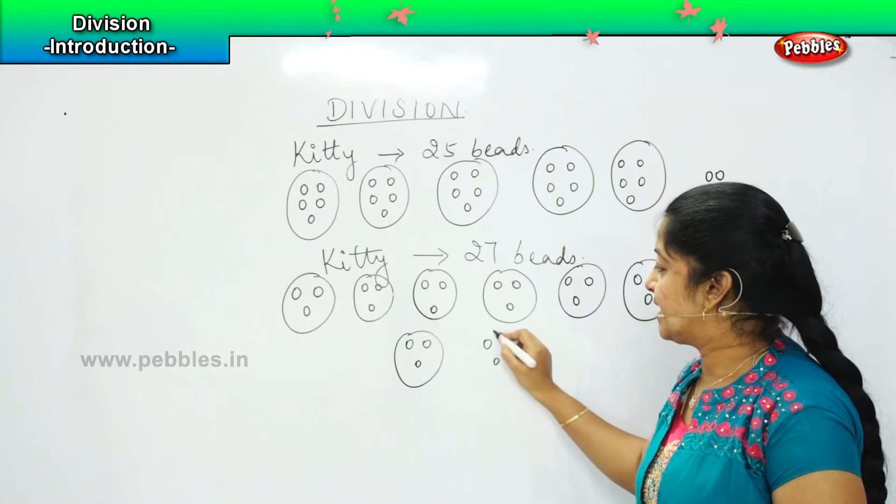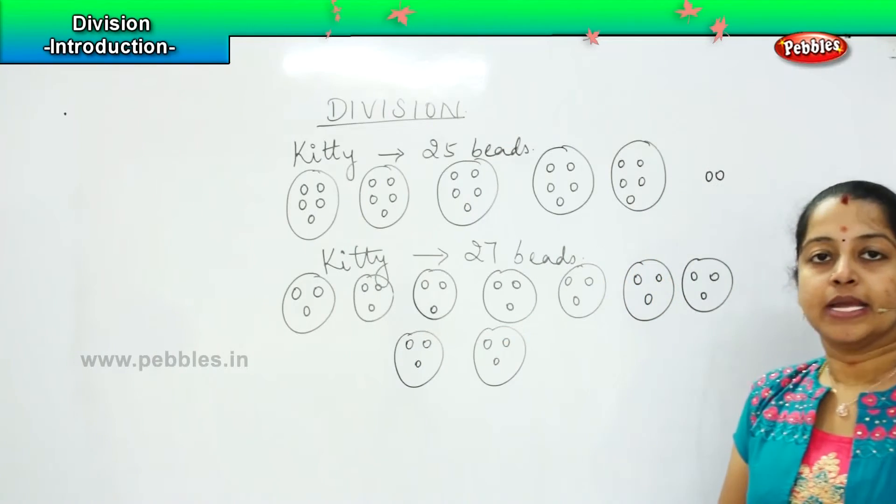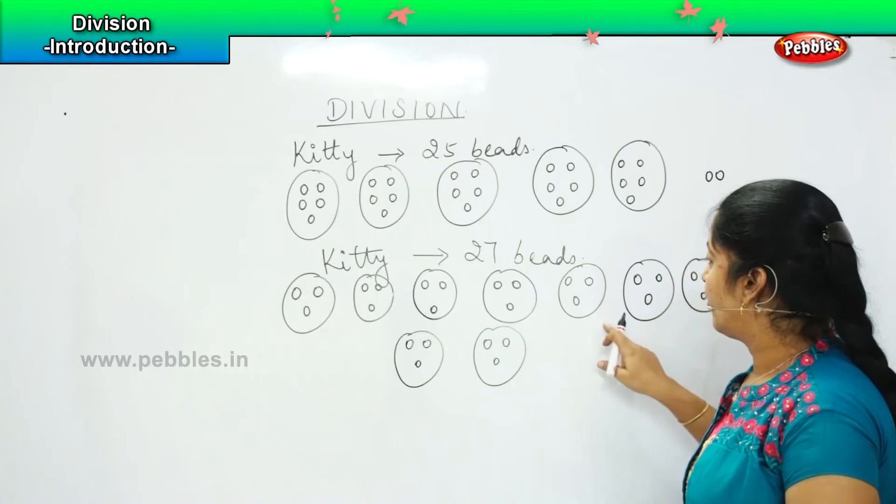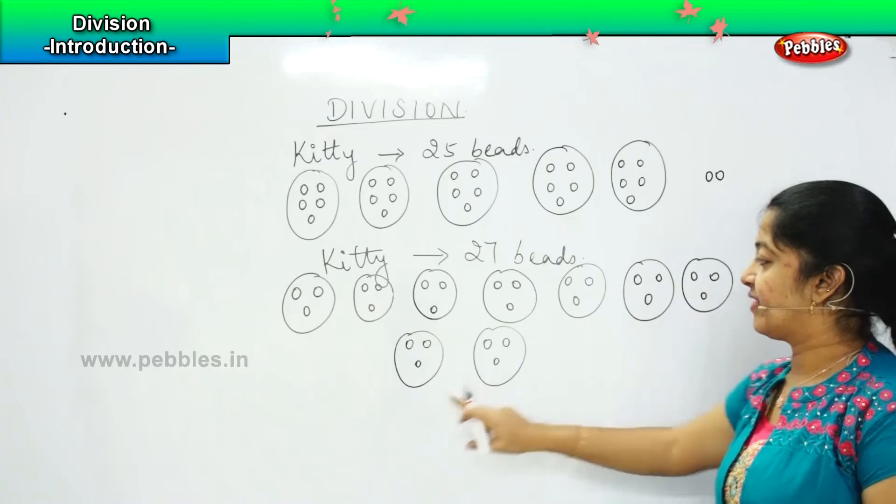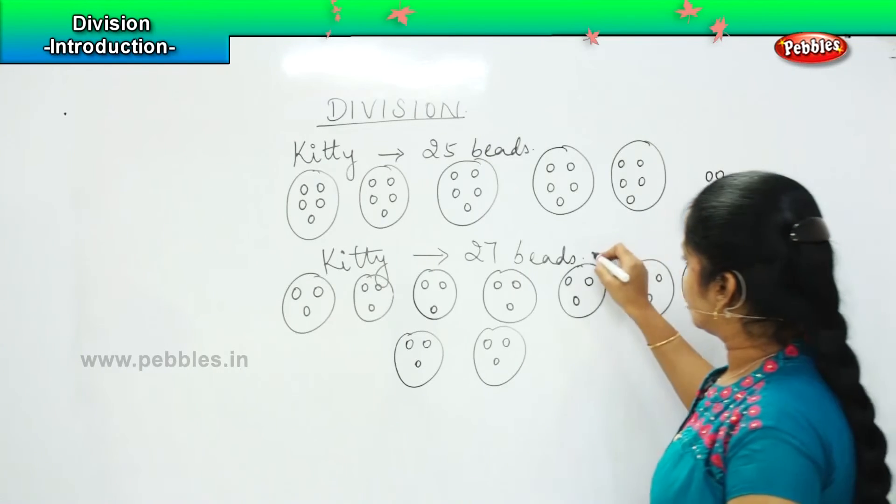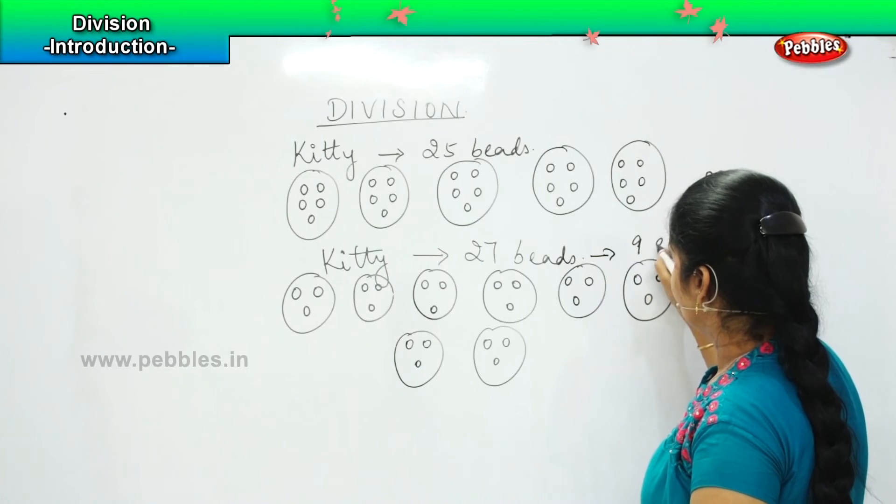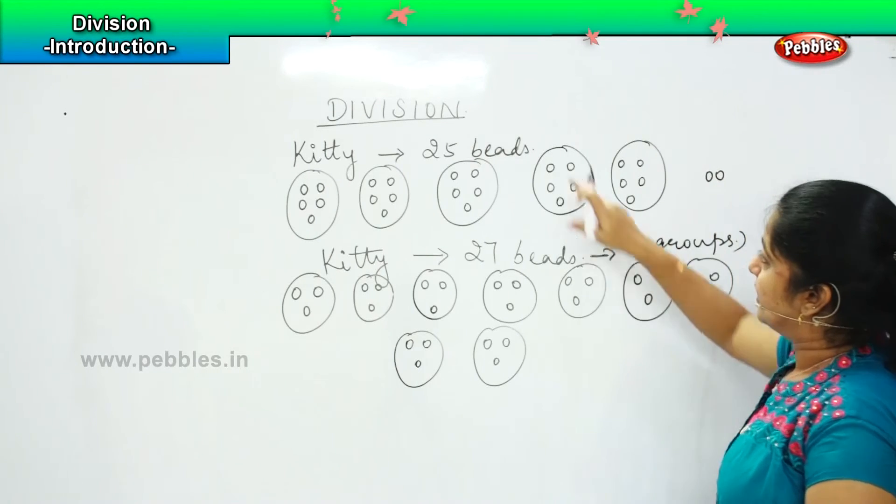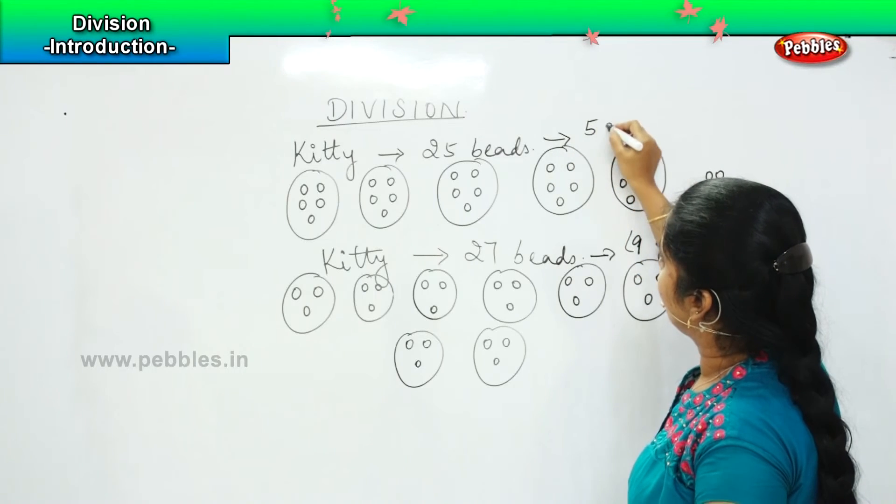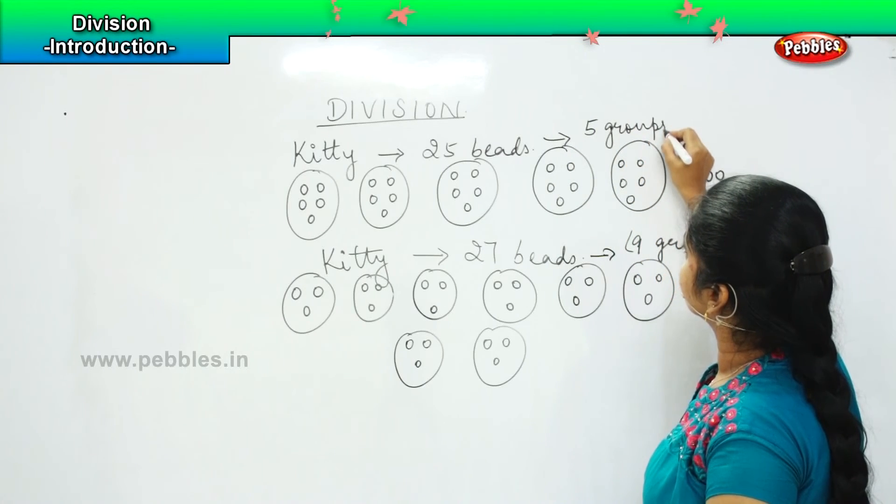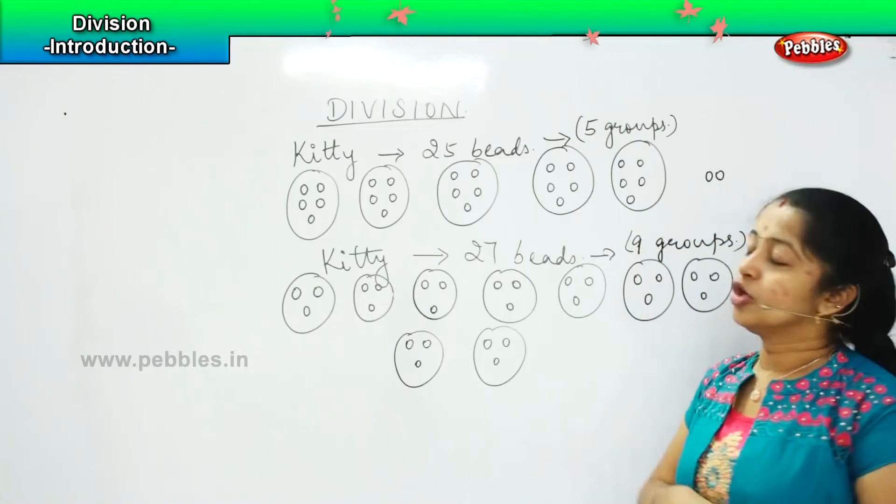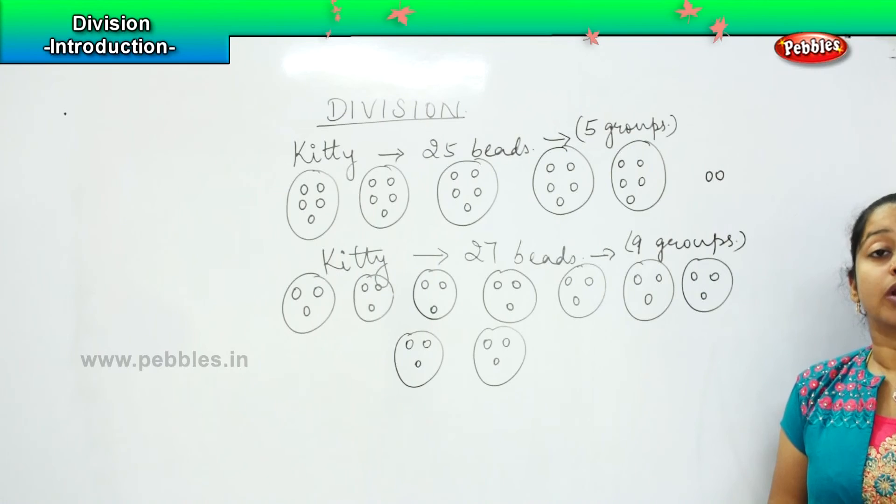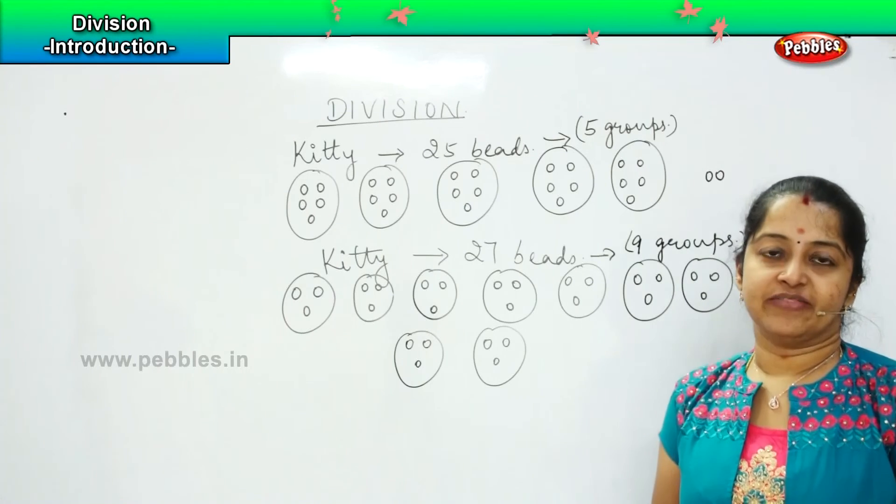So now my 27 beads are divided into how many groups, children? Let's count: 1, 2, 3, 4, 5, 6, 7, 8 and 9. So now this 27 beads I have divided in 9 groups, and this 25 beads I have divided into 5 groups. So grouping of these big number of beads into smaller parts, smaller equal parts is called as division.